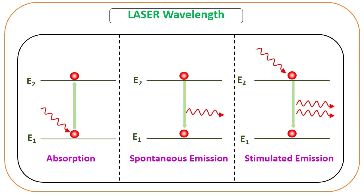For stimulated emission, suppose the atom is in the higher excited state. When energy is given to this atom in the higher excited state, the atom comes back to the ground state with the ejection of two photons. The difference is that in spontaneous emission, the photons released are not unidirectional, but in stimulated emission the photons released are unidirectional. For laser action to take place, we need this unidirectional property of the laser beam.